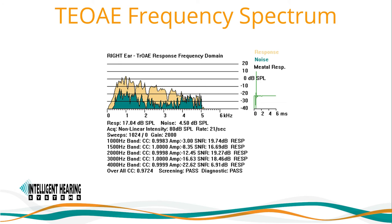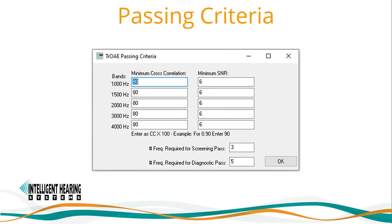Responses are typically present when threshold is less than 25 dB. The passing criteria is defined in terms of minimum cross-correlation and minimum signal-to-noise ratio. Values of 80 for cross-correlation and 6 dB for SNR are typically used. Cross-correlation data is the reproducibility of responses in buffer A and B — you are requiring the time domain response to repeat within itself at least 80%. A CC value of 1 means exact reproducibility. The second criteria is that the response amplitude must be above the noise amplitude by at least 6 dB. Responses are expected from normal middle ear and pure tone sensitivity of 25 dB HL. Responses are not expected from abnormal middle ear or cochlear hearing loss of 35 dB HL or greater.